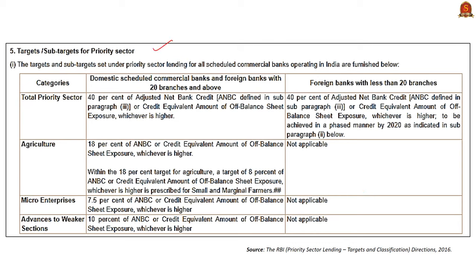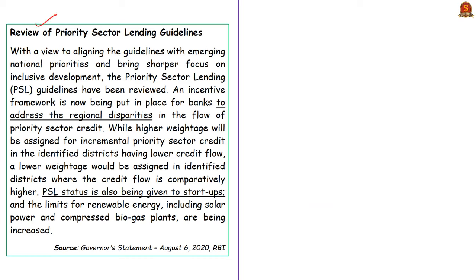The directions issued by the Reserve Bank of India also prescribe targets to be assured by the banks under the priority sector lending program. These targets and sub-targets are listed here for reference, and some lenience is given to foreign banks with less than 20 branches compared to other banks in terms of achieving and adhering to the targets. The news article reports that the Reserve Bank of India has reviewed the existing guidelines related to the priority sector lending program and has sought to address regional disparities in flow of credit.